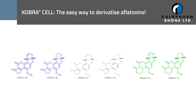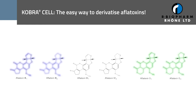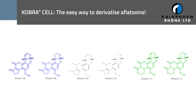Aflatoxins fluoresce naturally under UV light. The Bs fluoresce blue and Gs fluoresce green, with the subscripts relating to their relative chromatographic mobility. However, B1 and G1 do not fluoresce to a high degree and require derivatization prior to HPLC detection.